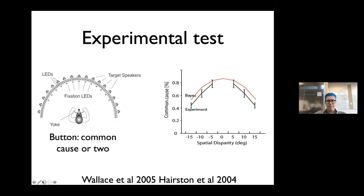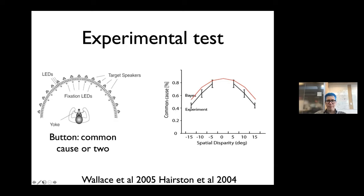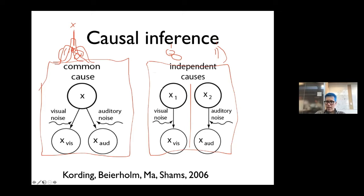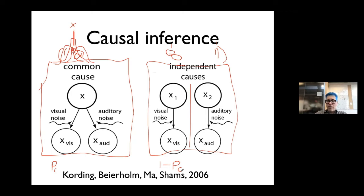How do we model such cases? As you saw in the exercises when we did the mixture of Gaussians: we have p_common times the probability of the data under the common-cause model, and we have (1 - p_common) for the independent case. This is exactly the case we modeled in the second tutorial yesterday.